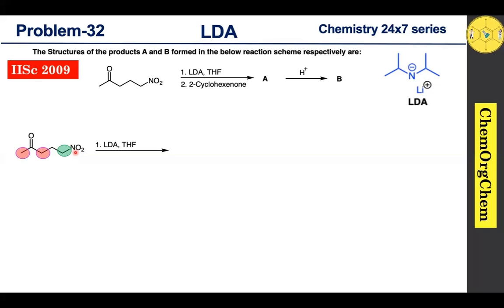To predict which site LDA will readily deprotonate, consider the pKa scale. The two sites near the carbonyl have a pKa value of approximately 20, whereas the site near the nitro group has a pKa value of approximately 9, which clearly indicates that this site is more acidic compared to the other two. Therefore, when you use LDA, it takes a proton from this site to produce the corresponding carbanion.